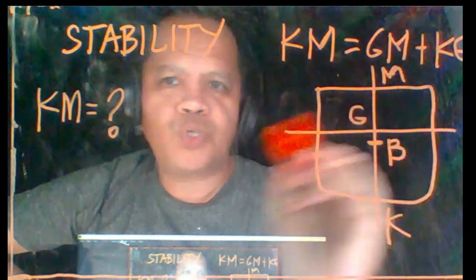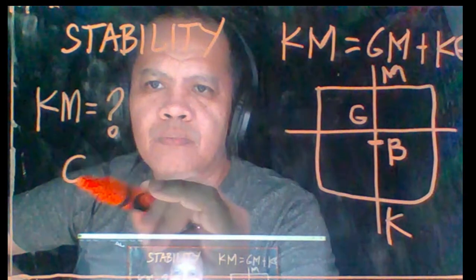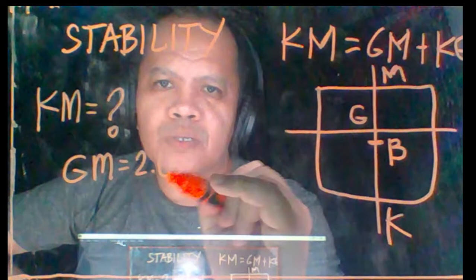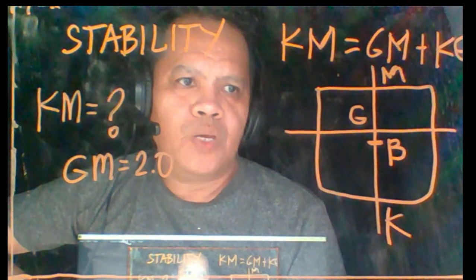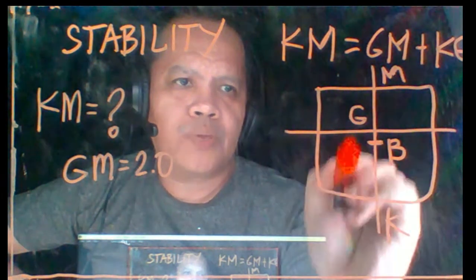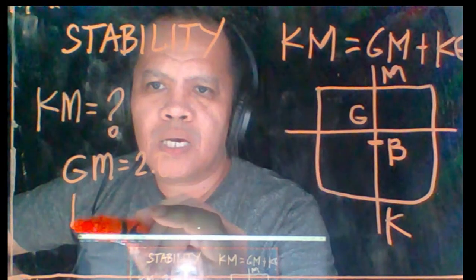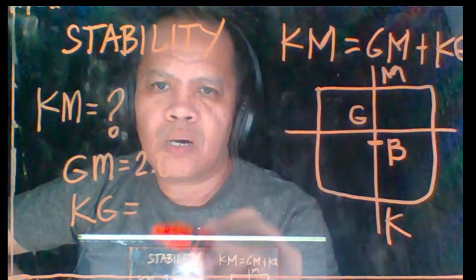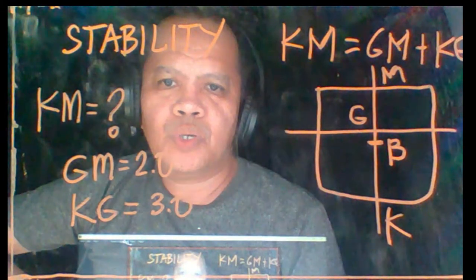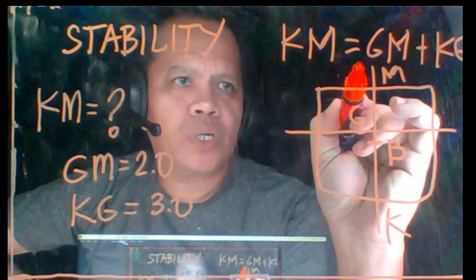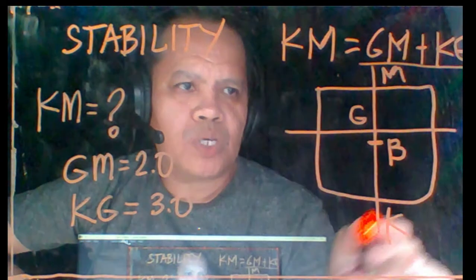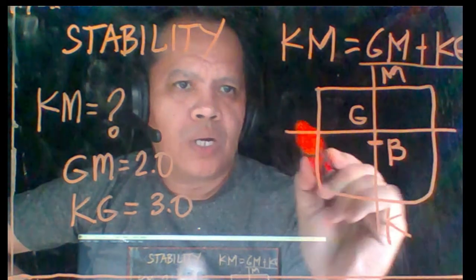If you have the GM of 2.0 meters, let's say, and you have the KG from keel to G of 3.0, you just add this one because your formula is GM plus KG.